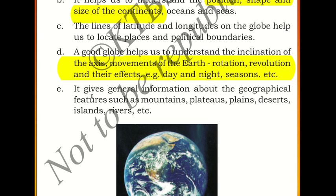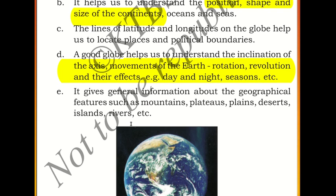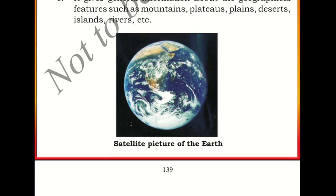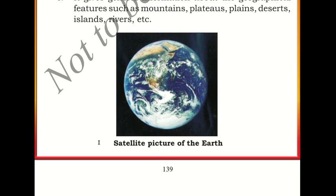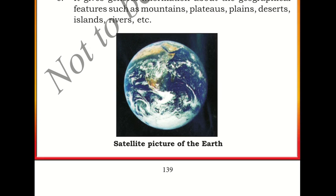The globe also gives general information about geographical features such as mountains, plateaus, plains, deserts, islands, and rivers. Those are the different uses of a globe. Here is a satellite picture of the earth similar to the one we saw earlier — on this one you can also only see one side of the planet, where you can see part of Africa.